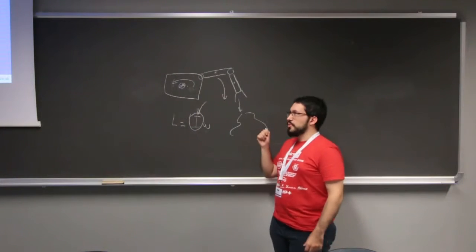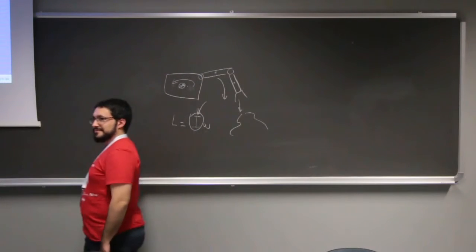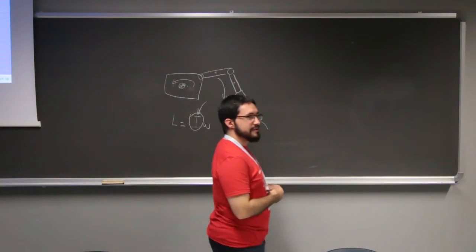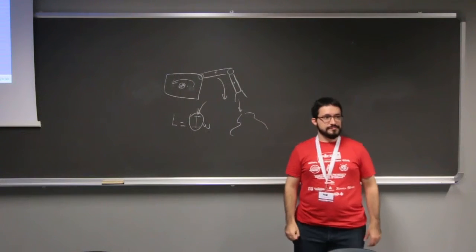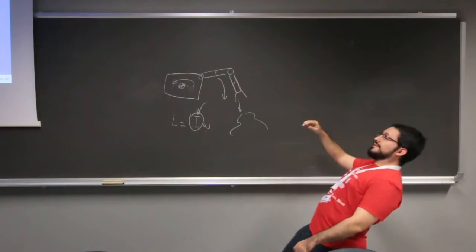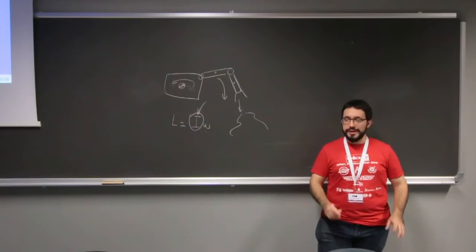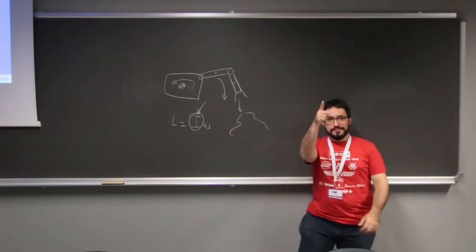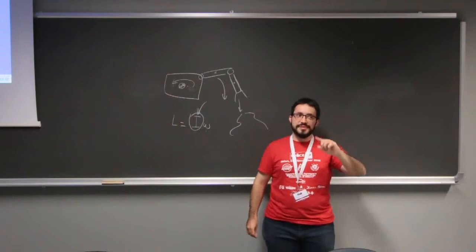Is it still possible to reach the target using just the robotic arm? Yes. You can go the opposite way — for example, using reaction wheels. That's one approach. You can also change the way you move the arm to reach the target.